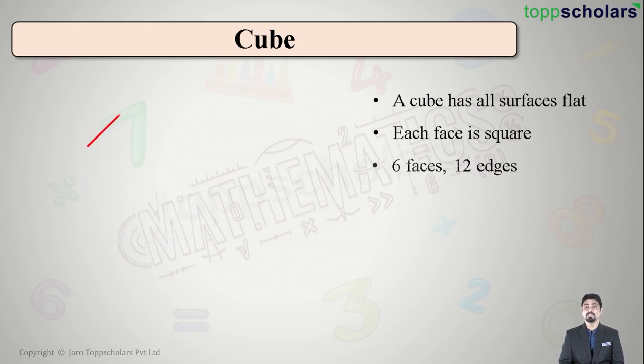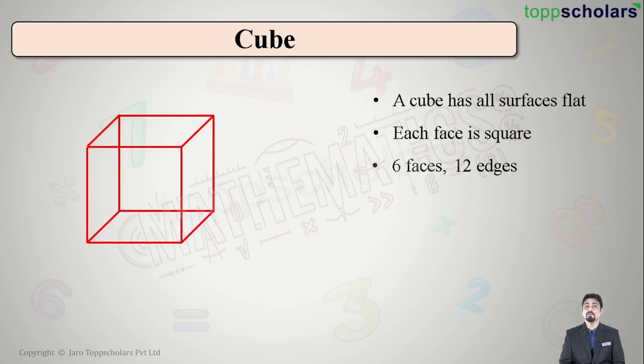How many edges? Twelve. One, two, three, four, five, six, seven, eight, nine, ten, eleven, twelve. Wow! Twelve edges.